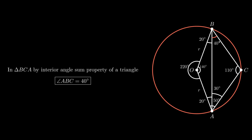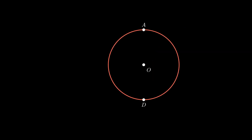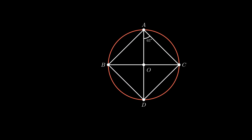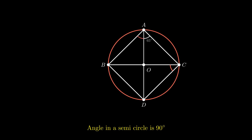Moving on to the next one. Consider a circle with center O such that AD and BC are the diameters of the circle. Angle CAO measures 65 degrees. We need to find the values of angle BAO and angle BCD. To find angle BAO, consider arc BAC which forms a semicircle. Since the angle in a semicircle is always 90 degrees, angle BAC equals 90 degrees. From the figure, angle BAC is the sum of angle BAO and angle CAO, so angle BAO equals 90 minus 65, which is equal to 25 degrees.